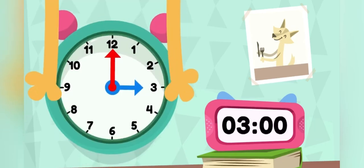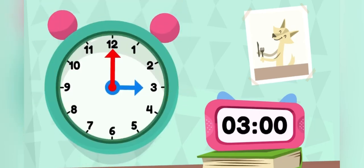Let's do a loop-de-loop of my clock. The hour hand is pointed at 3, and the minute hand is at 12. This means it's exactly 3 o'clock. When the minute hand points to the 12, it means that there are 0 minutes past the hour.